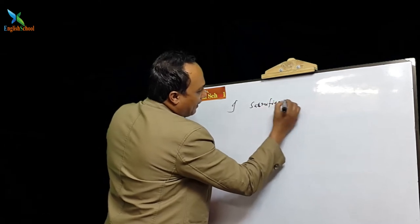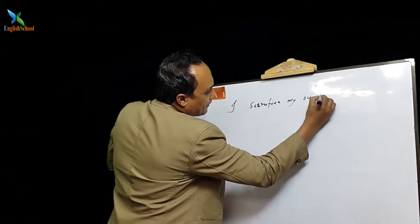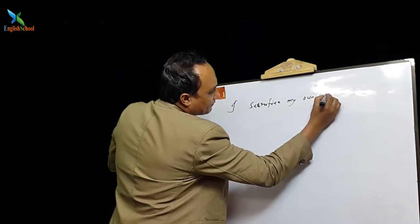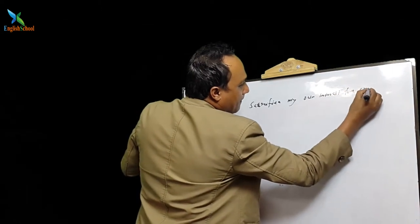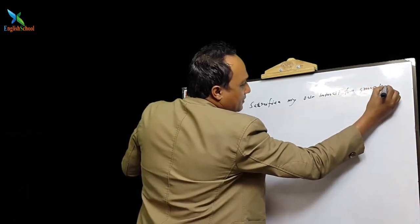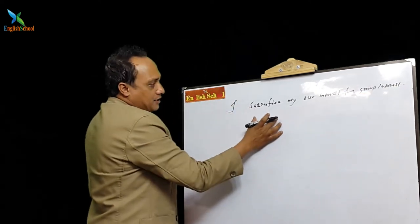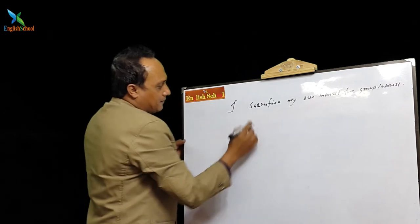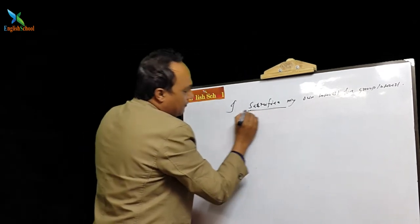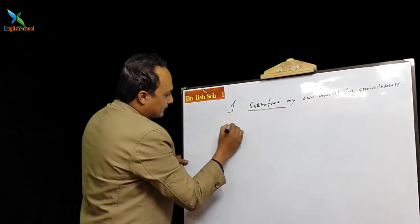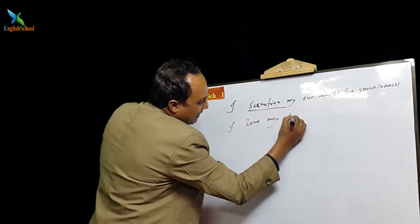Practice sentence: 'I sacrifice my own interest for group interest.' Here, 'sacrifice' is the verb in the sentence. Another practice sentence: 'I love my country.'